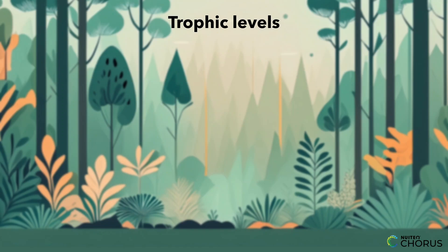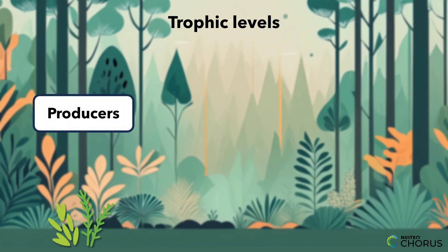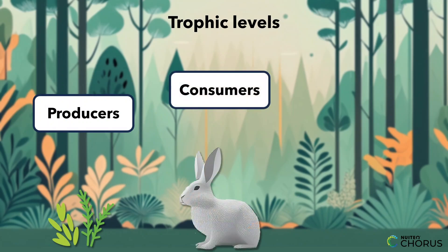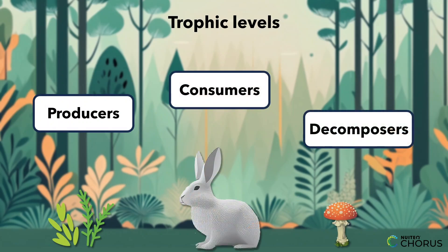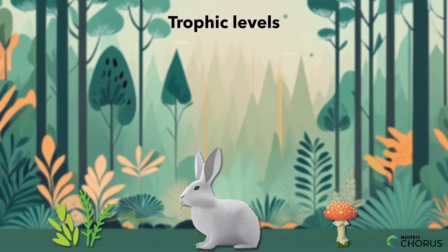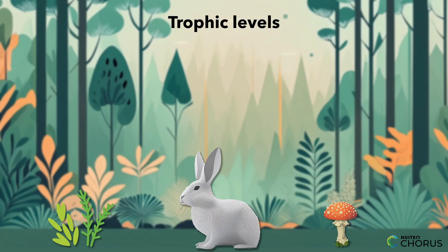Our first stop is understanding trophic levels. Picture a forest: plants are producers, rabbits are consumers, and fungi are decomposers. Watch how energy flows from one level to the next — this is the foundation of every ecosystem, the energy dance that keeps it alive and thriving.